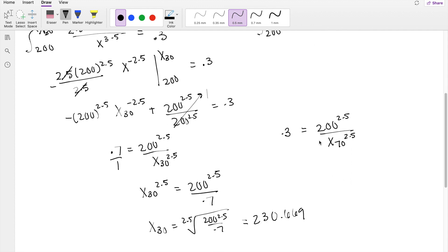So cross-multiplying, you get X_70 to the 2.5 equals 200 to the 2.5 divided by 0.3. So then X_70 equals the 2.5 root of 200 to the 2.5 over 0.3, which is equal to 323.7.